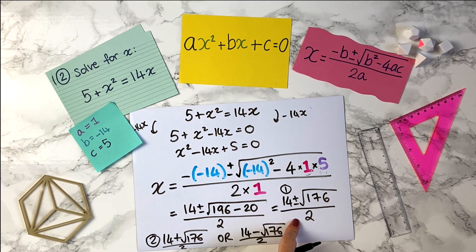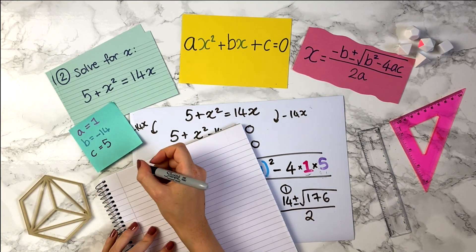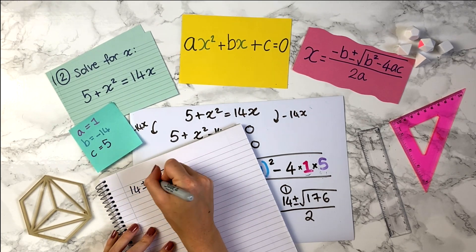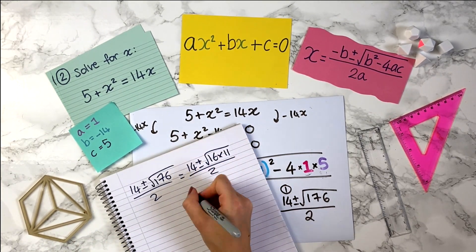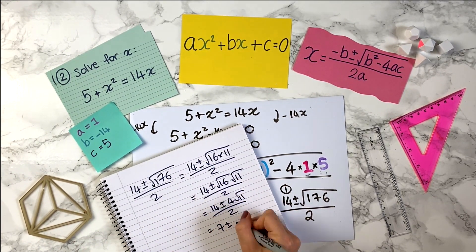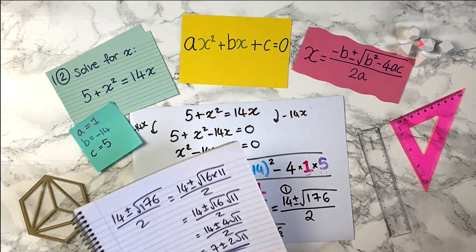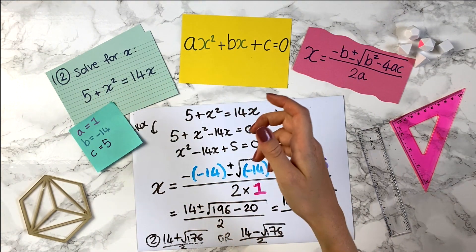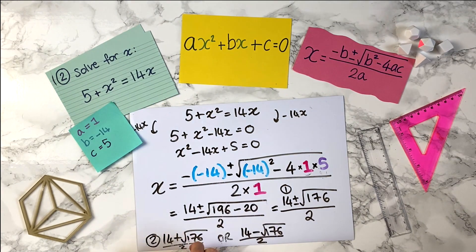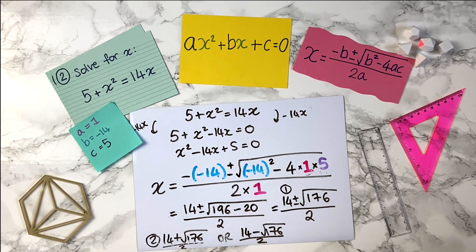You can also simplify this a little bit further — this is optional, don't worry if you haven't covered it. But you could also simplify the surd in 14 plus or minus root 176 over 2. And again, remember you can substitute this in — put it in the original equation, so if you try this answer and do 5 plus this squared, check if it equals 14 times this, and if it does then you know you've got the correct answer.